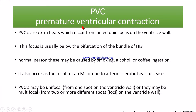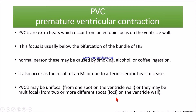PVCs are the extra beats which occur from an ectopic focus under the ventricular wall. The focus is usually below the bifurcation of the bundle of His. It can also occur in normal persons with smoking, alcohol, or caffeine ingestion, as well as due to myocardial infarction or atherosclerotic heart disease. PVCs may be unifocal — from one spot of the ventricular wall — or multifocal, meaning two or more different spots or foci on the ventricular wall.